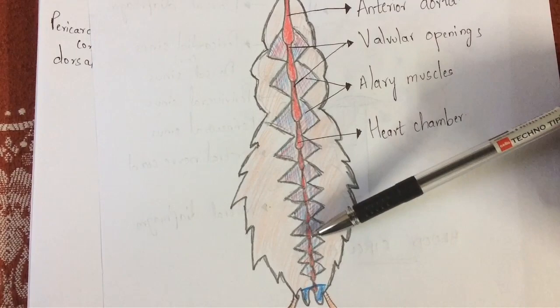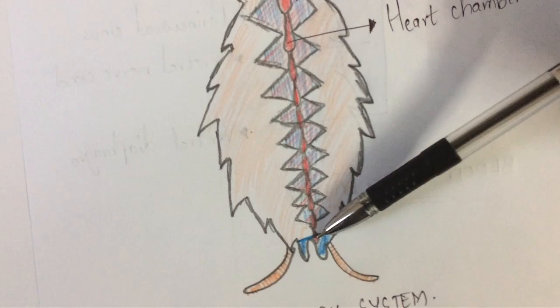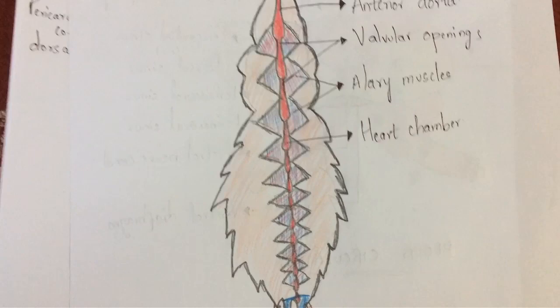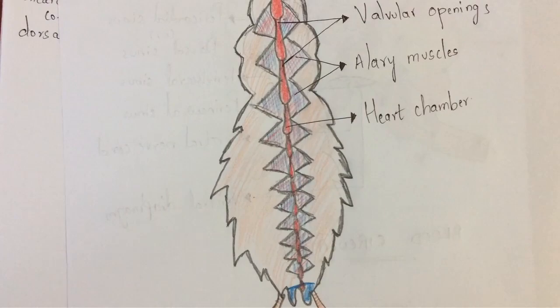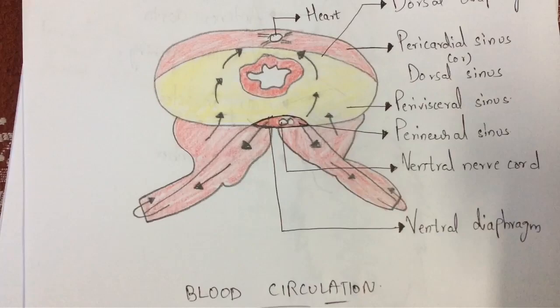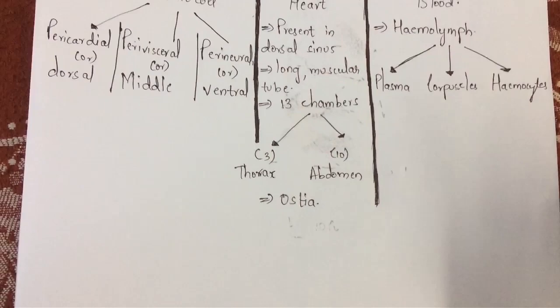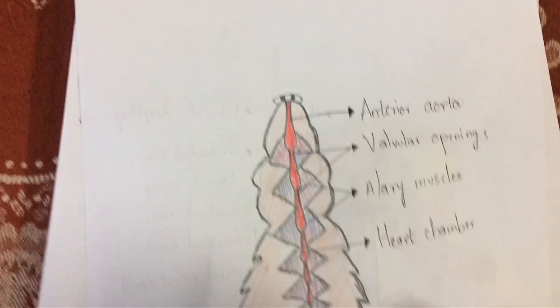The heart mainly consists of 13 chambers — count carefully: 1, 2, 3, 4, 5, 6, 7, 8, 9, 10, 11, 12, and 13. When drawing this in examinations, make sure to draw exactly 13 chambers. Three of the chambers are mainly present in the thorax region, and the remaining 10 chambers are present in the abdomen region.